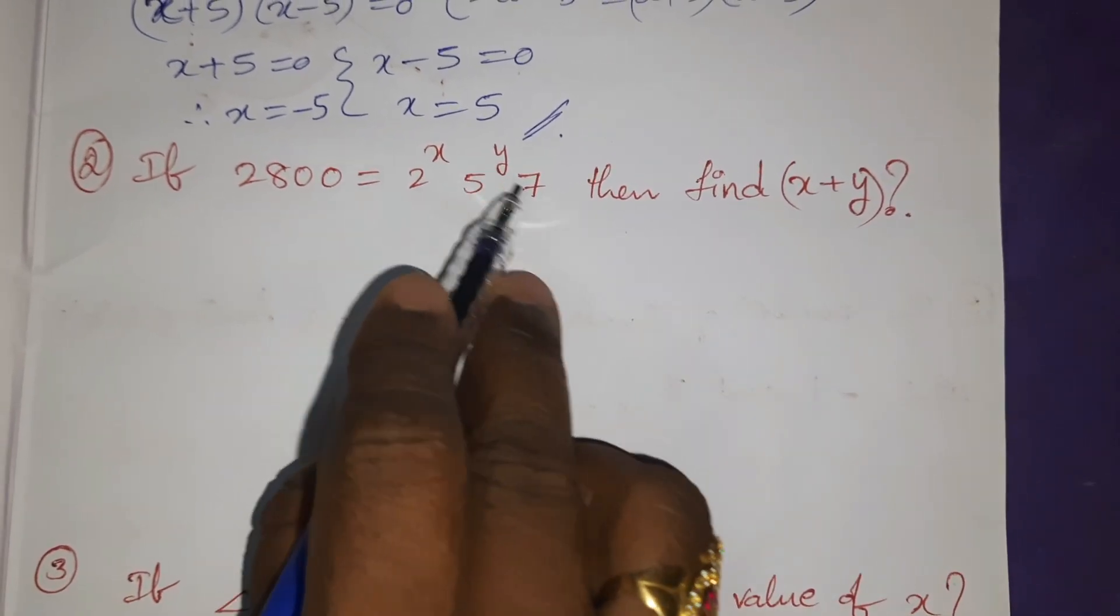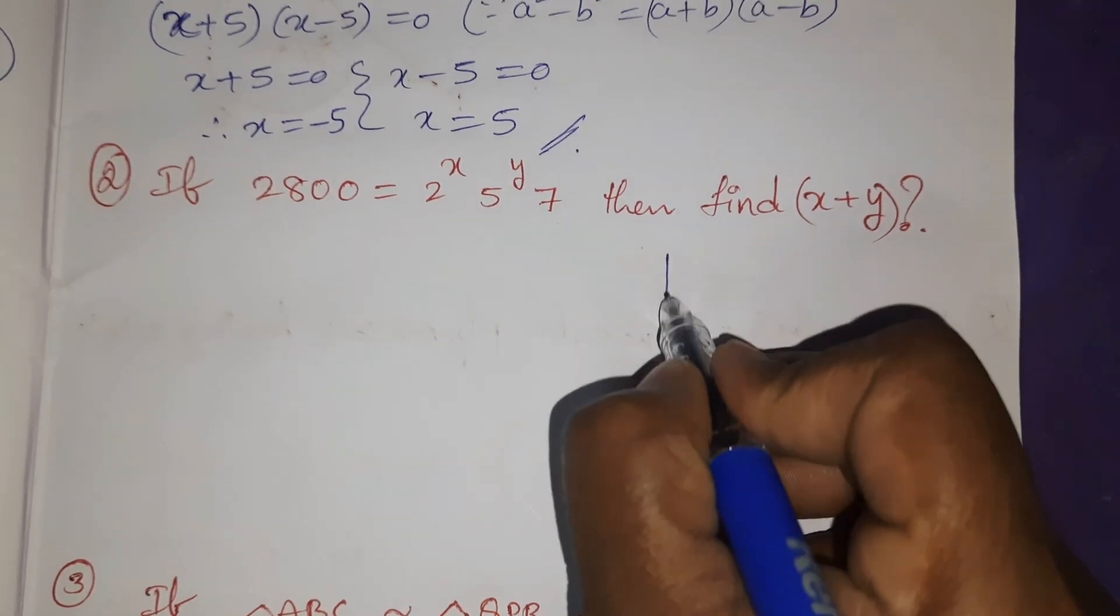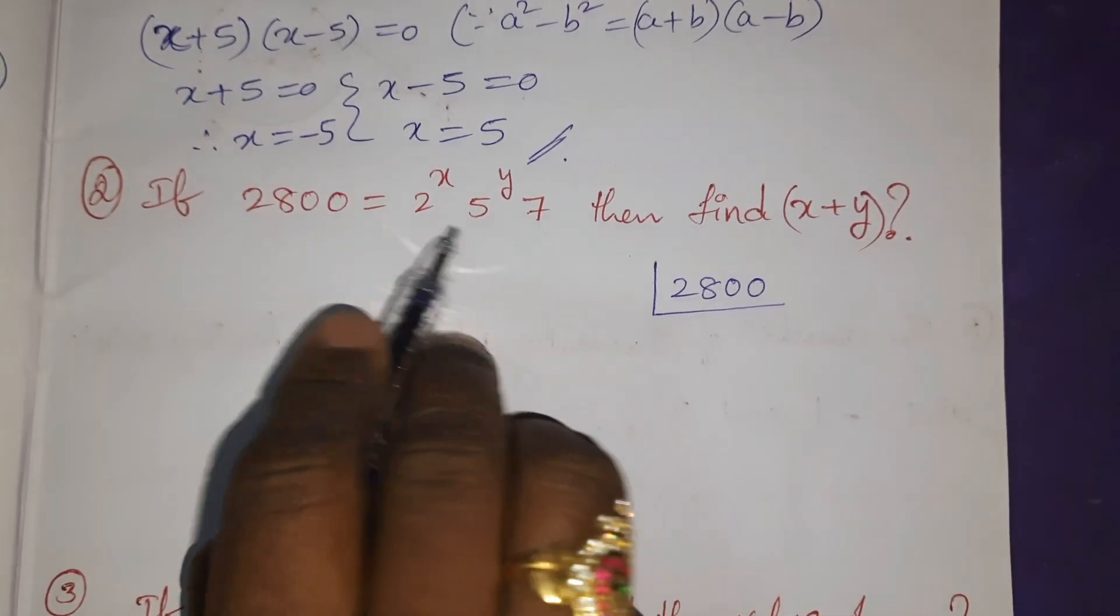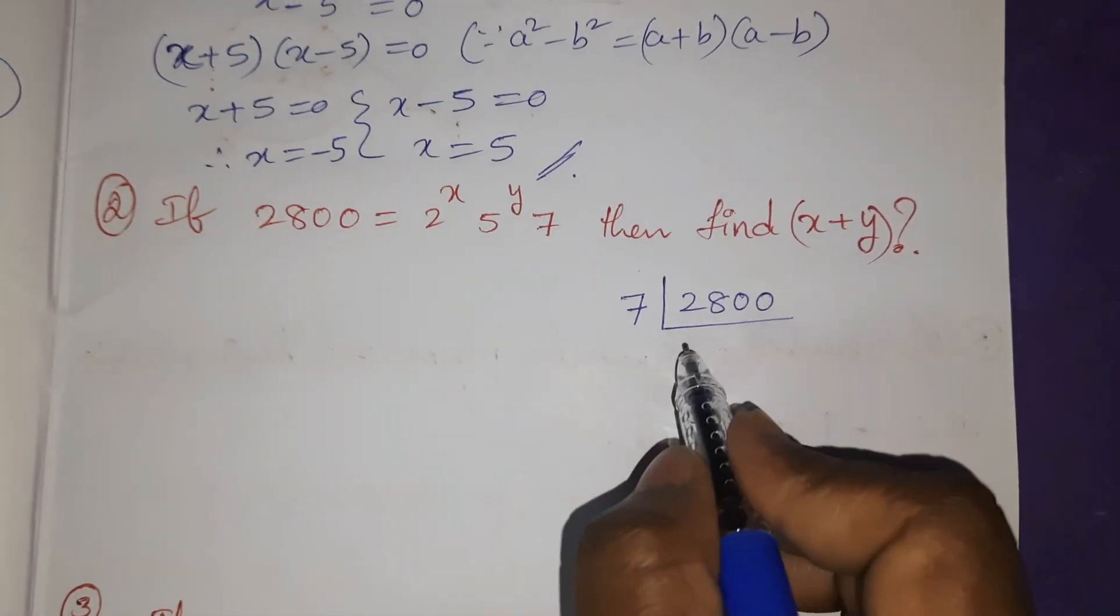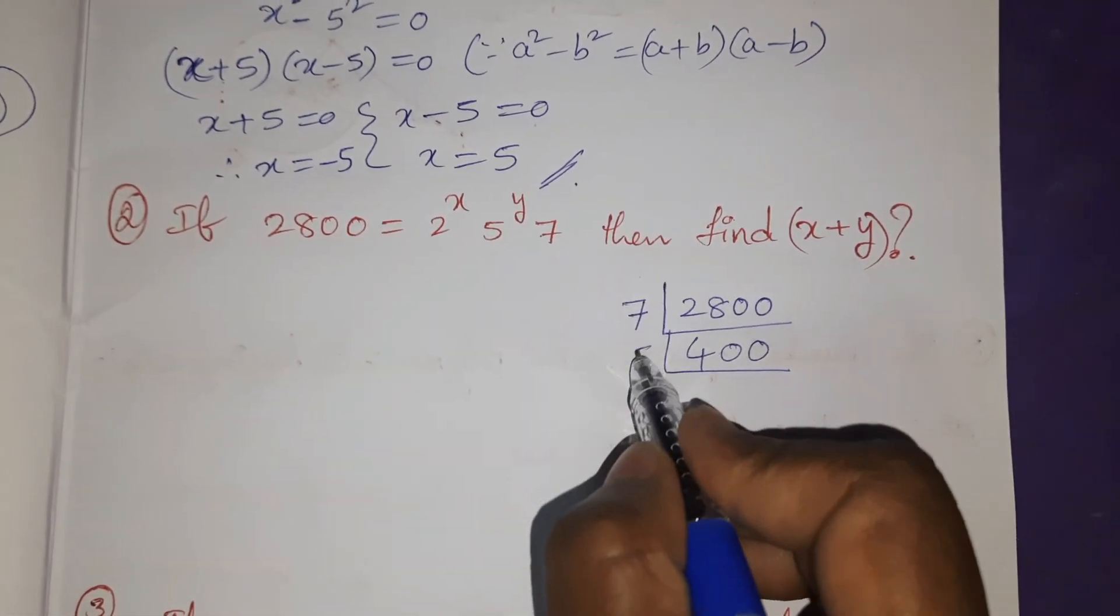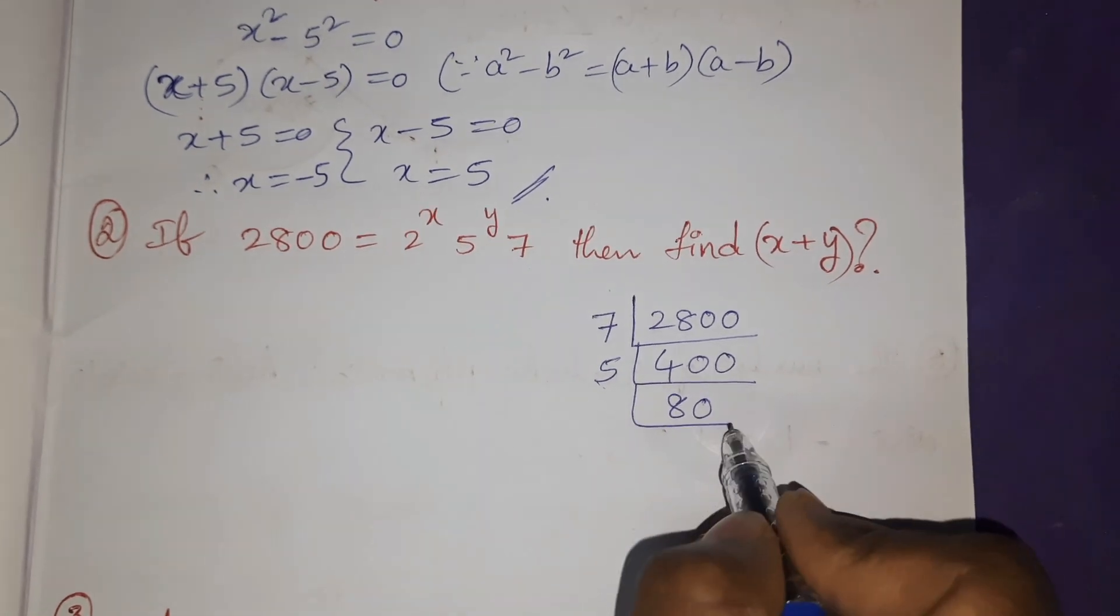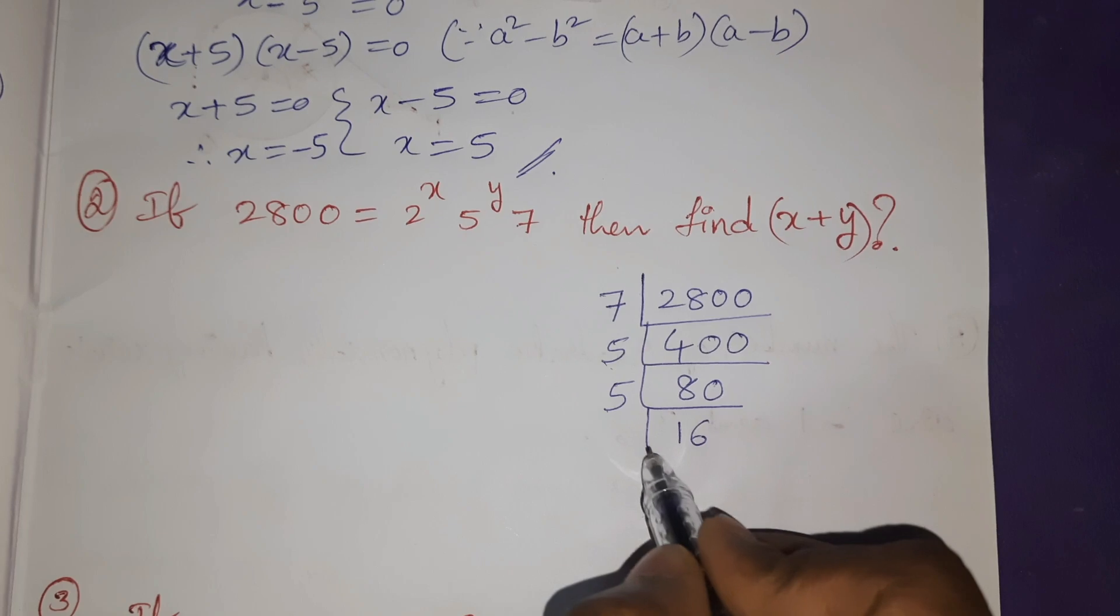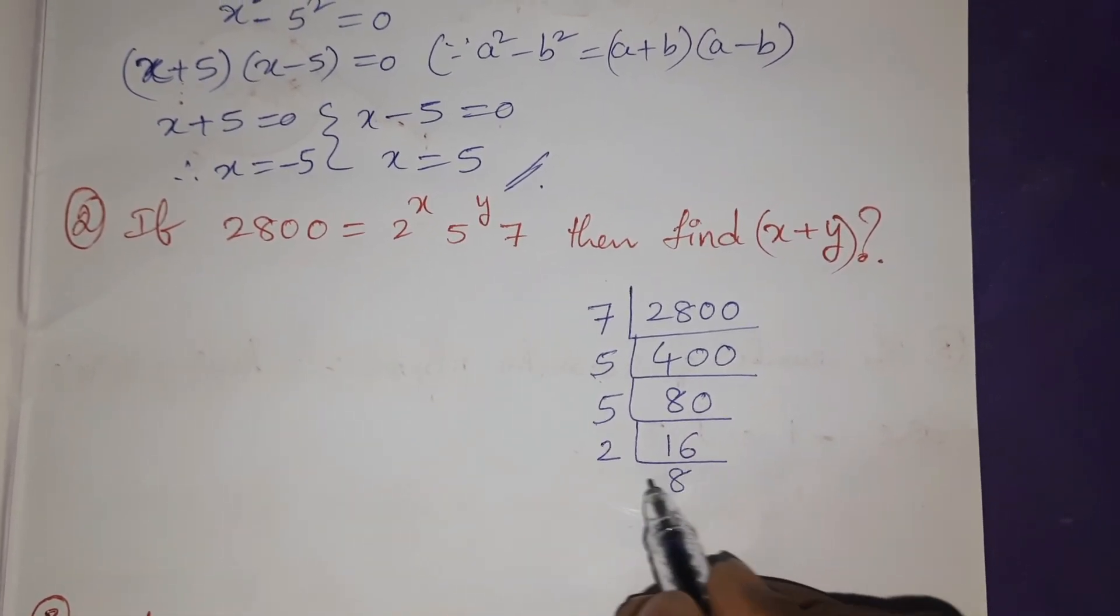So we have to do here prime factorization. 2800 in the RHS, 2, 5, 7 is there. We'll take first bigger number 7. 7 goes into 400. Next bigger number 5 I am taking. 5 goes into 80. Next again it goes 5 into 16. So now 2 into 8, 2 into 4.